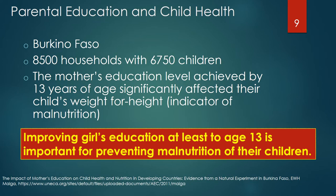A 2011 study by Eugenie Maega in Burkina Faso of 8,500 households with 6,750 children concluded that the education level of mothers achieved by 13 years of age significantly affected their child's weight-for-height, a strong indicator of malnutrition. So education policies aimed at improving the education of girls at least to 13 years of age is important for preventing malnutrition of their children.